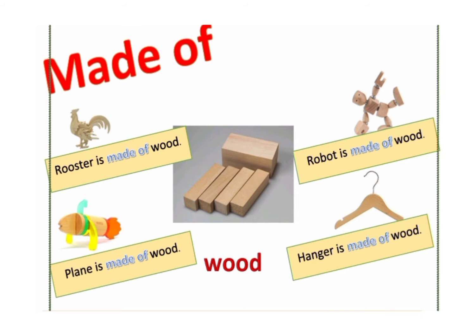Roster is made of wood. Robot is made of wood. Plane is made of wood. And hanger is made of wood too.